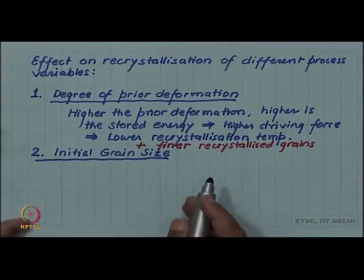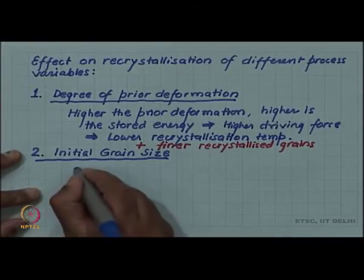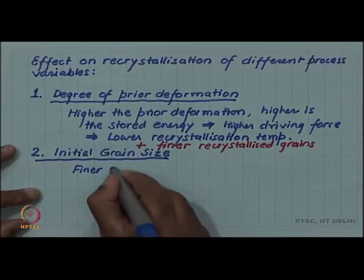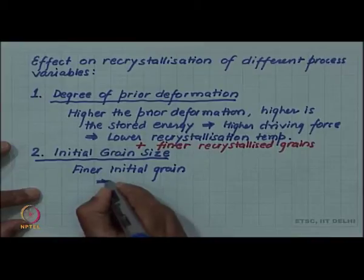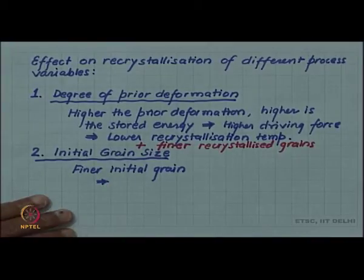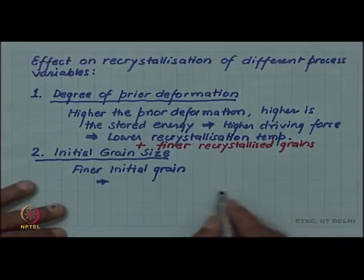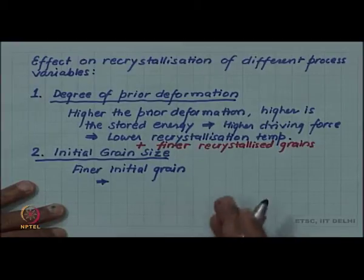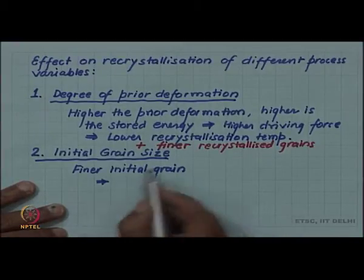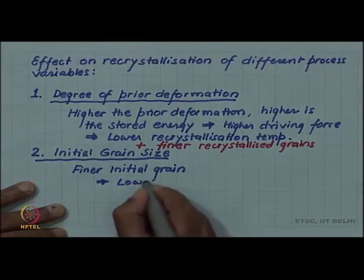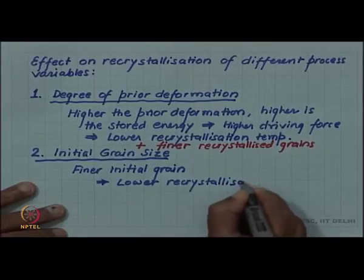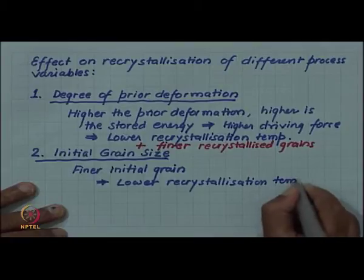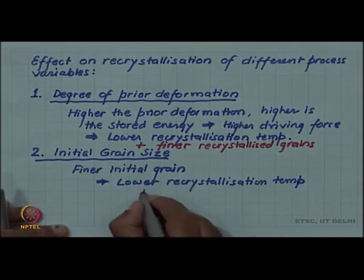If you start with a finer initial grain size, it also leads to more nucleation sites for recrystallization, because it is the initial grain boundaries that act as nucleation sites. So, finer initial grain size means more grain boundary sites, which gives a higher recrystallization rate, a lower recrystallization temperature, and a finer recrystallized grain size.